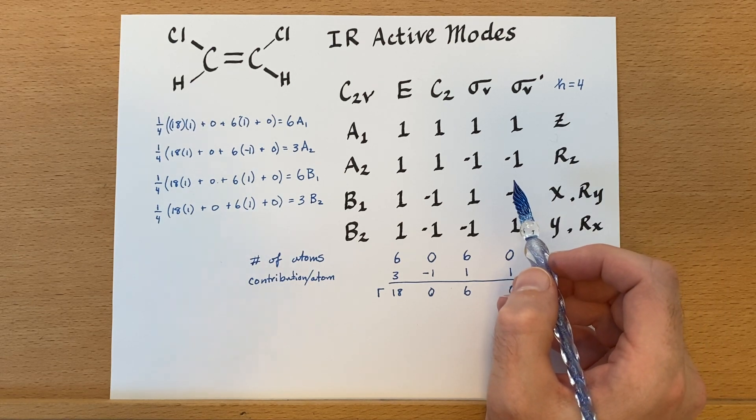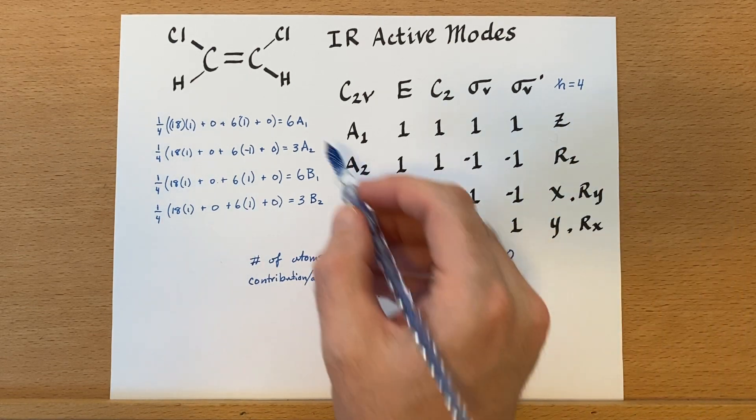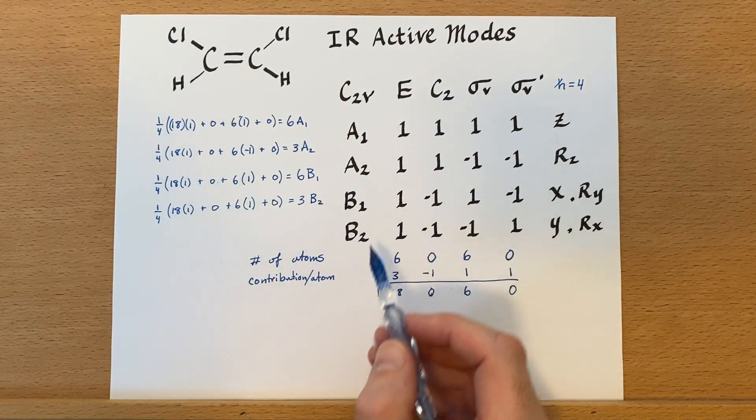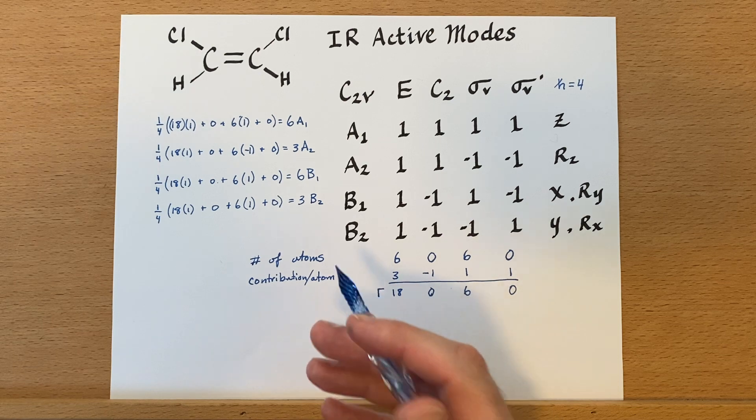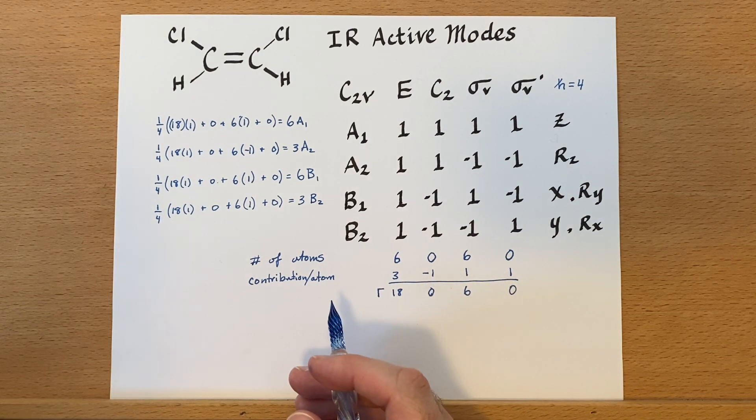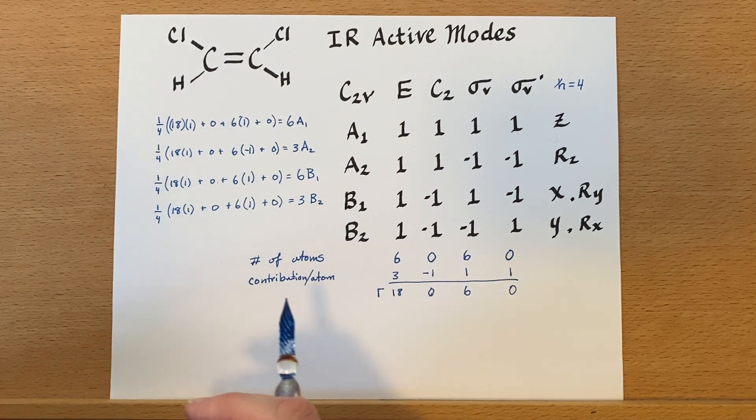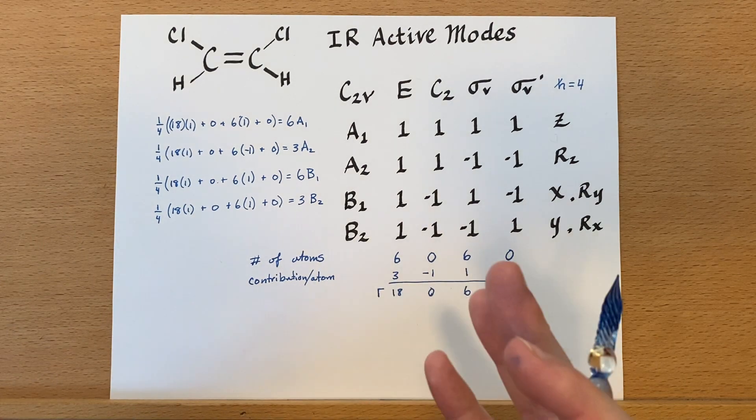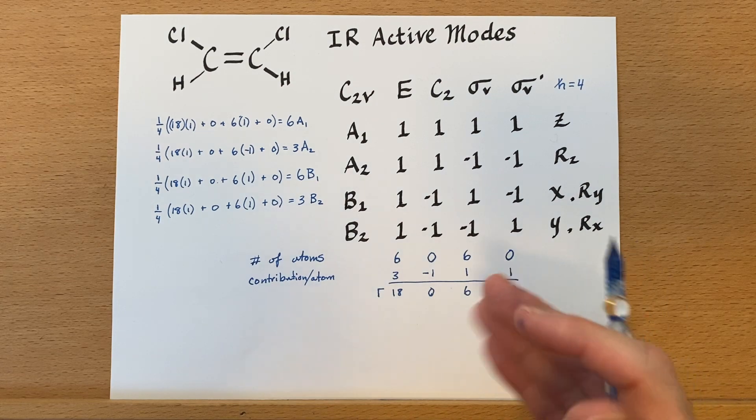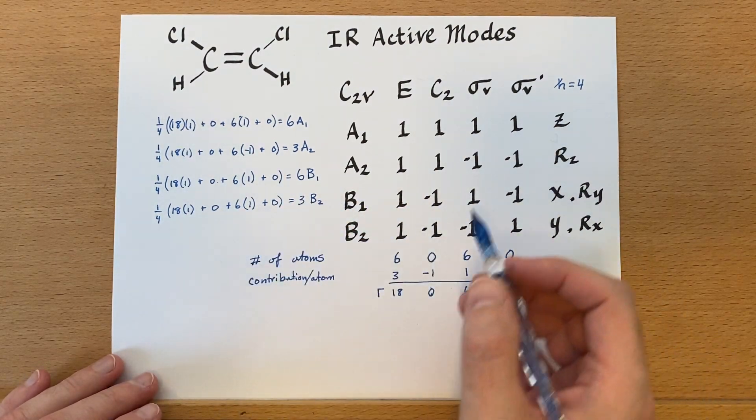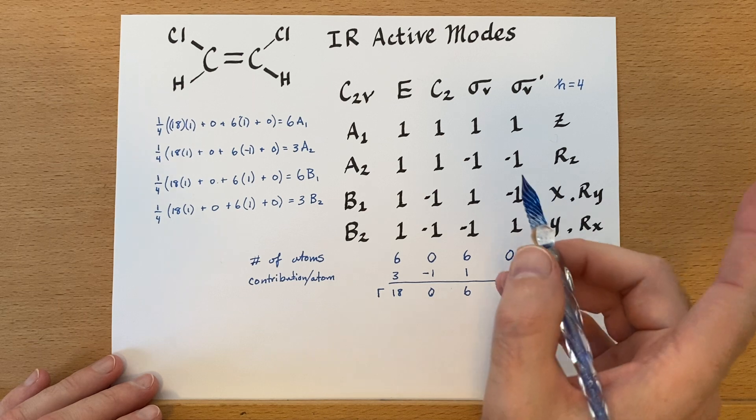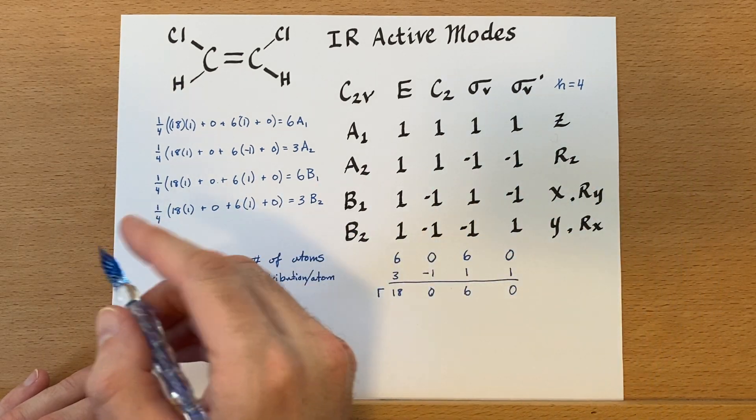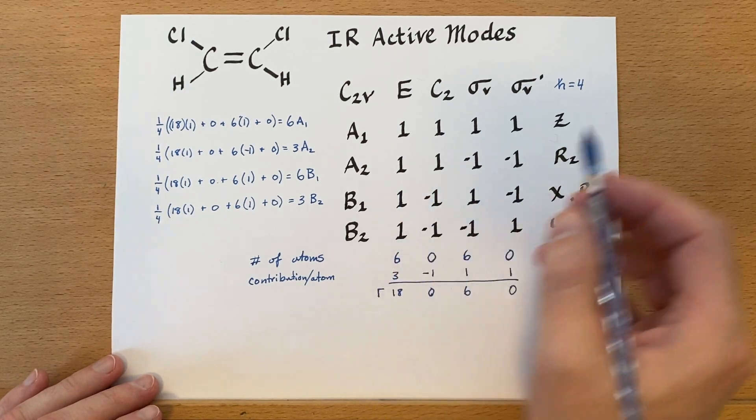So, it doesn't matter as much where you put the two reflection planes. It is still usually helpful to put the Z axis in line with the primary axis of rotation. If you do that, you might end up with a slightly different answer than some other reference that you look up. But the number of active modes will still be the same in all of the references that you're looking at.